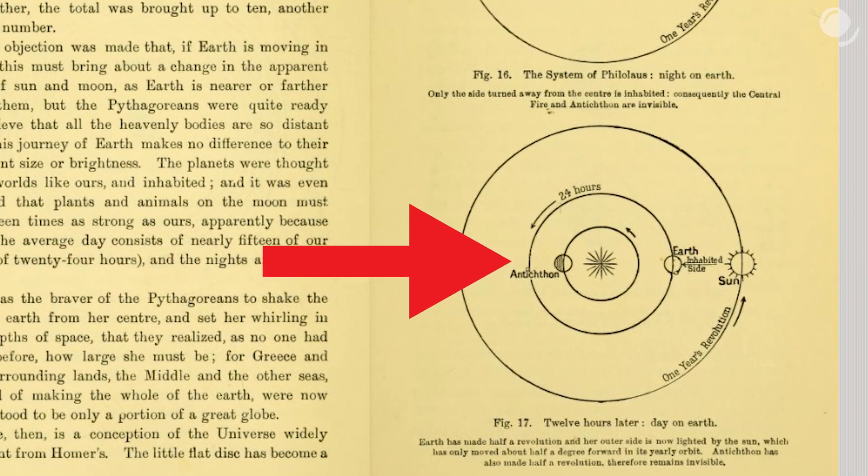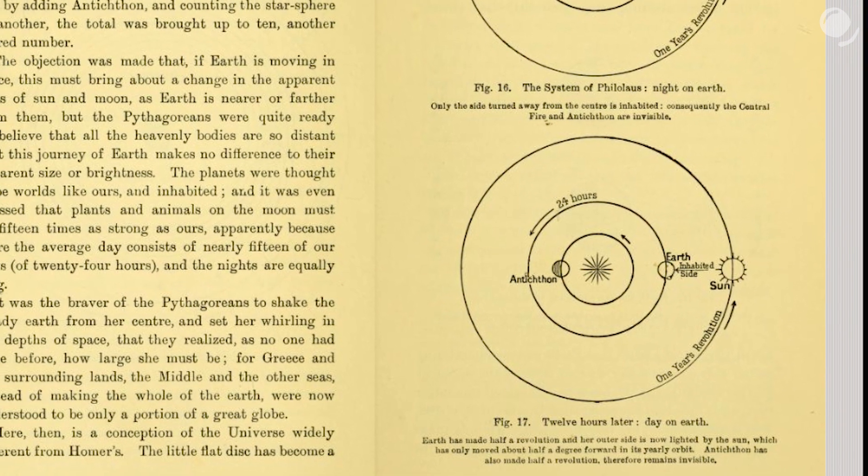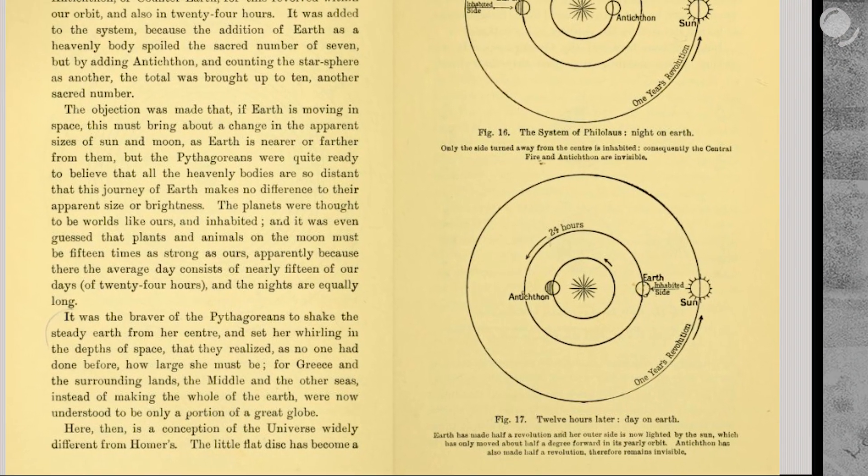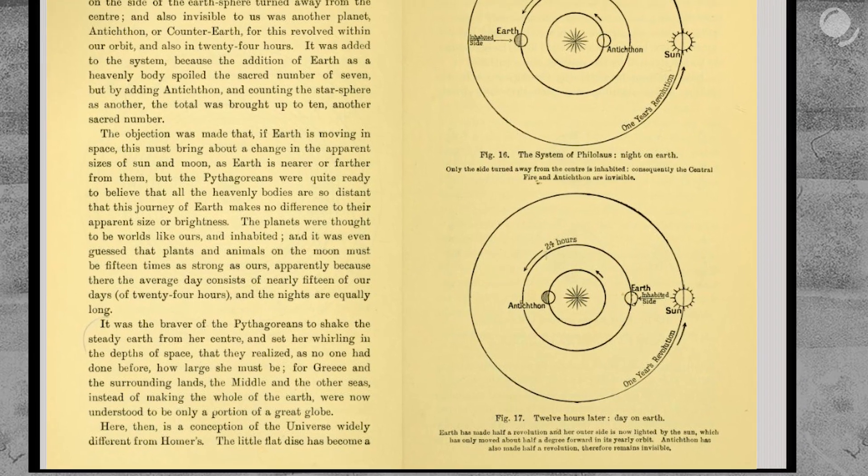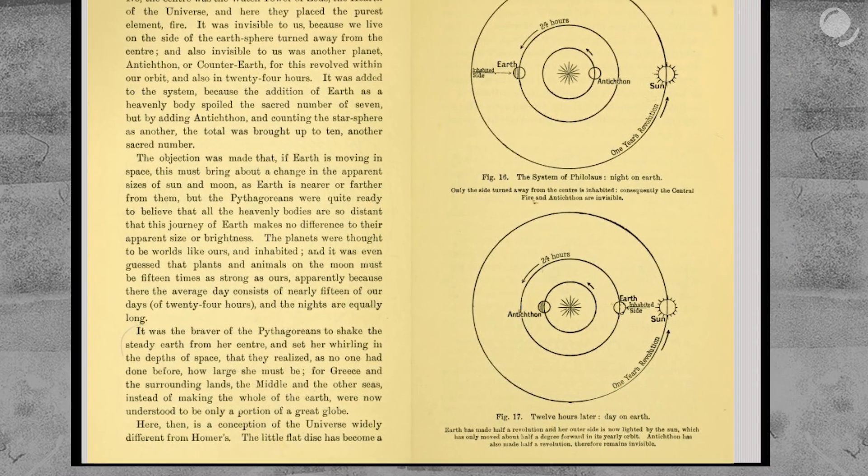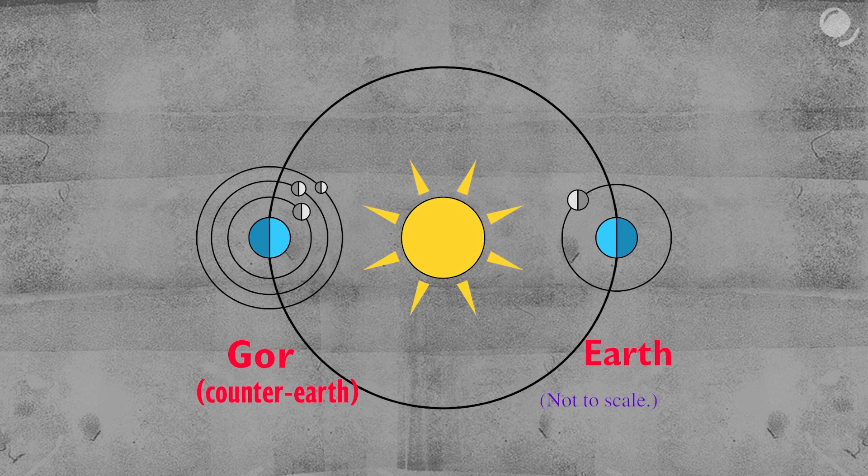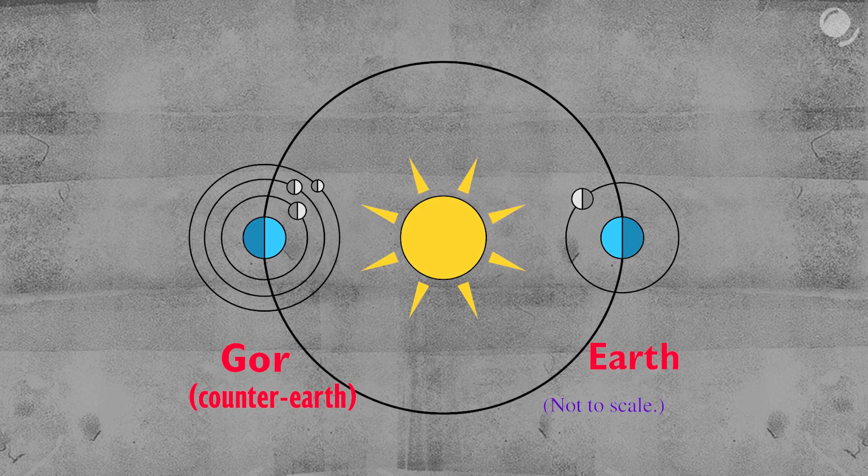In his system, counter-Earth moved at the same velocity as the Earth, and that's why it was never visible. Why was it added? We don't know for sure. Either to make the total number of objects 10 instead of 9, or to have some sort of counter-balance for Earth. Eventually the idea of counter-Earth was dropped, but how can we be so sure it's not actually there?